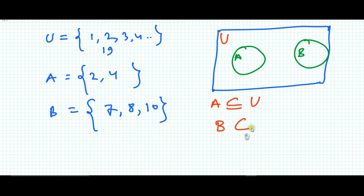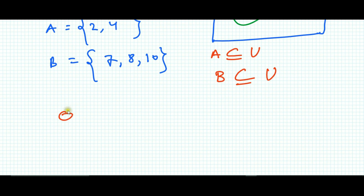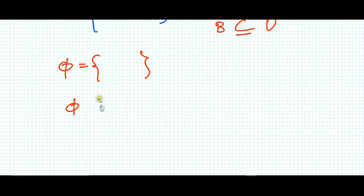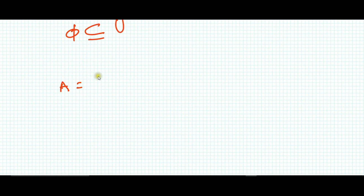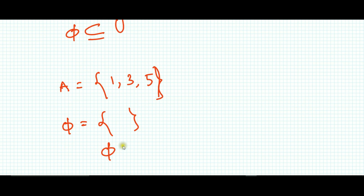A is a subset of U and B is a subset of U. Second, the null set or empty set has no members. An empty set can always be a subset of the universal set or any other set. Suppose set A has members 1, 3, 5 — we can say φ is a subset of set A. The empty set is a subset of any set.